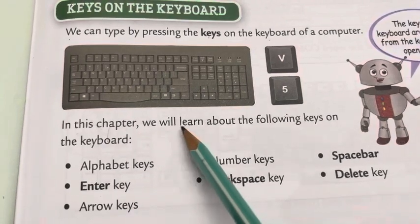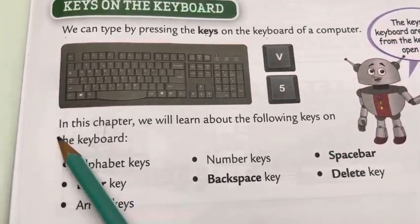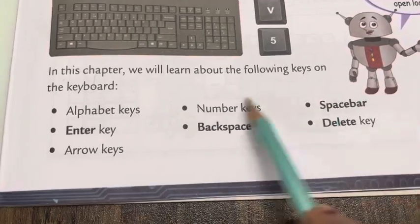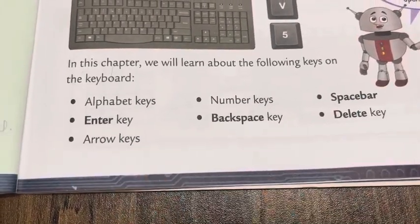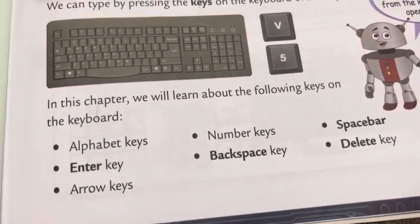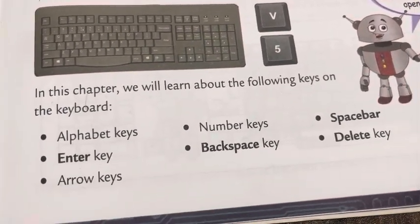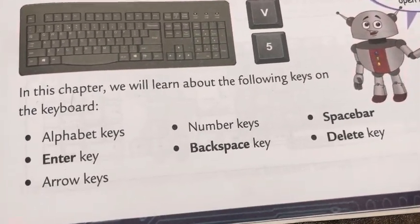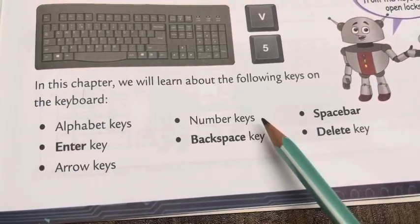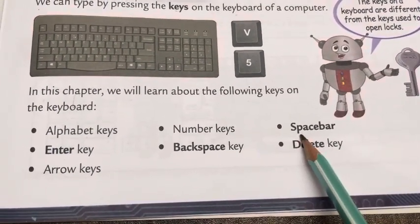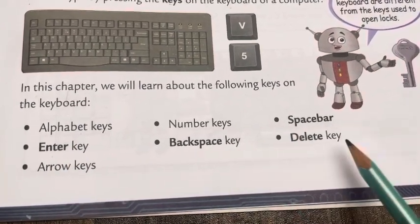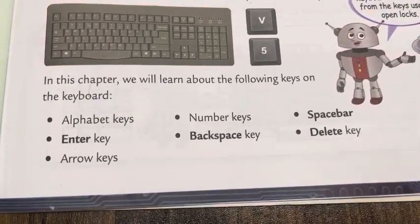In this chapter, we will learn about the following seven types of keys: alphabet keys, number keys, space bar, enter key, backspace key, delete key, and arrow keys. We will learn their functions, how they look, their shapes, and how they perform actions on the computer.